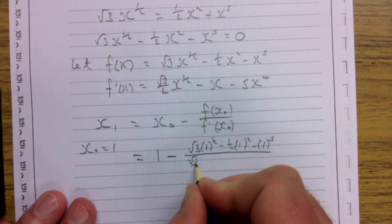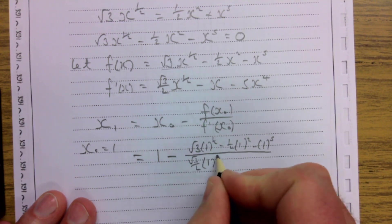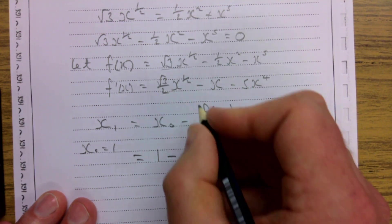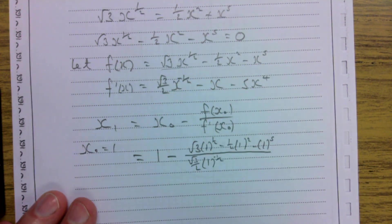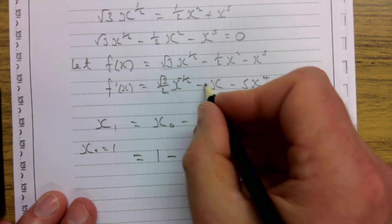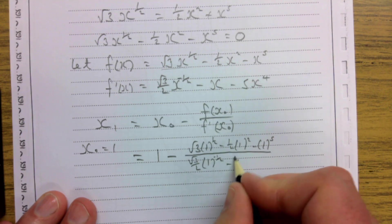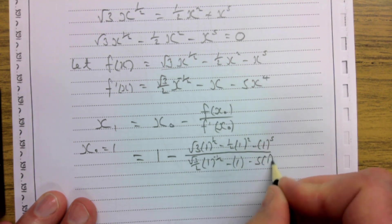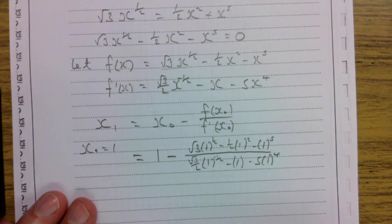Then on the bottom, it's (√3/2)(1)^(-1/2), so that's minus a half there actually, isn't it? Is that a wee mistake I have from earlier? Sorry about that. Then minus 1 minus 5(1)⁴.